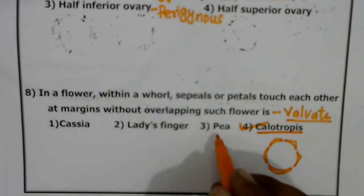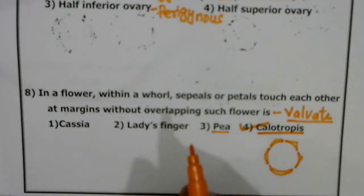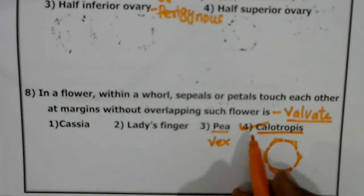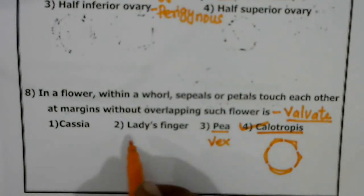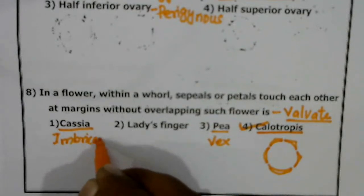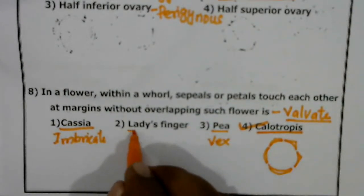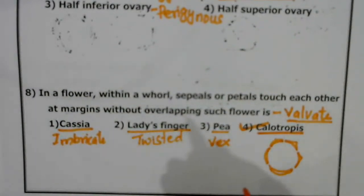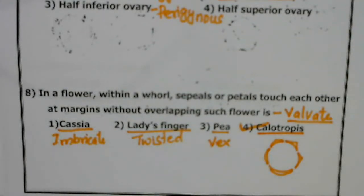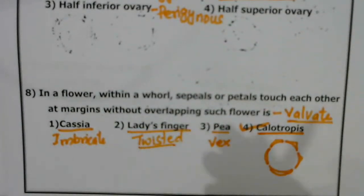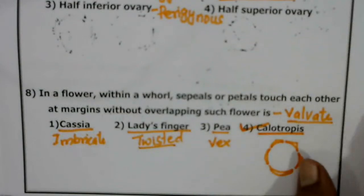Pea shows vexillary aestivation. Cassia shows imbricate aestivation. Lady's finger shows twisted aestivation — twisted means the margins of the sepals or petals overlap one another in a definite order. So the correct answer is option 4, which is Calotropis for valvate aestivation.